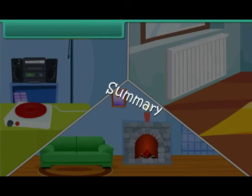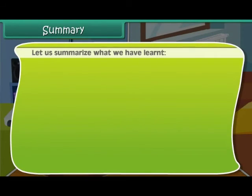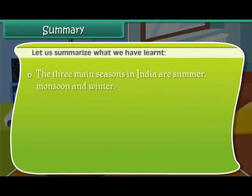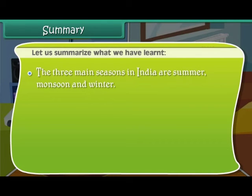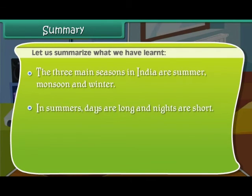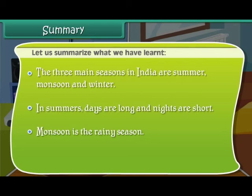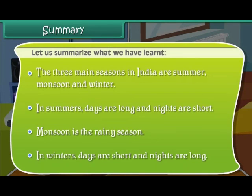Let us summarize what we have learnt. The three main seasons in India are summer, monsoon, and winter. In summers, days are long and nights are short. Monsoon is the rainy season. In winters, days are short and nights are long.